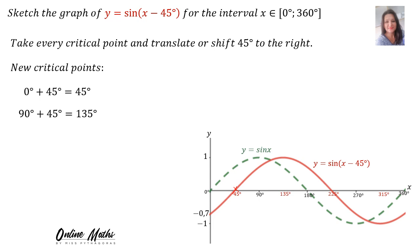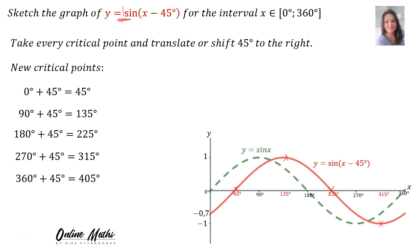The next critical point was at 90 plus 45 is 135. You can see the graph is indeed turning at 135 and 1. The A value is an invisible 1 — that's the amplitude. Then the next critical point: 180 plus 45 is 225, and 270 plus 45 is 315, where the graph turns at negative 1. At 360 plus 45 is 405 degrees, but this graph is sketched for the interval 0 up to 360, so the graph stops at 360.